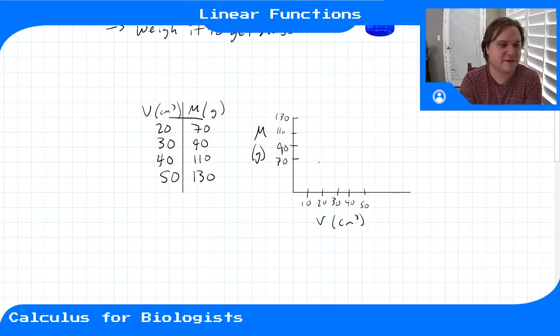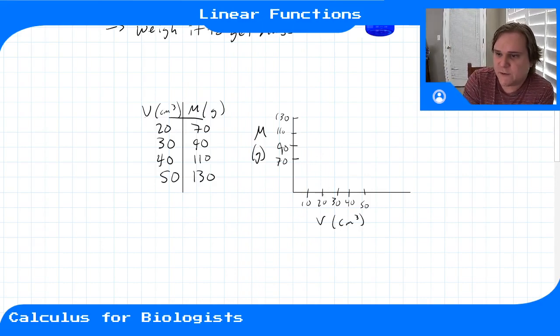So let's add our points on the graph. Let's say at 20 centimeters cubed for our volume on the x-axis, it'll be 70 grams. And then at 30 centimeters cubed, it'll be 90 grams. At 40, it'll be 110. At 50, it'll be 130. And then we just connect these with a nice straight line, and there's our line.